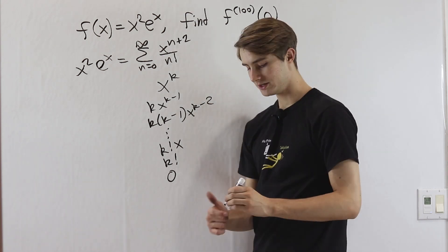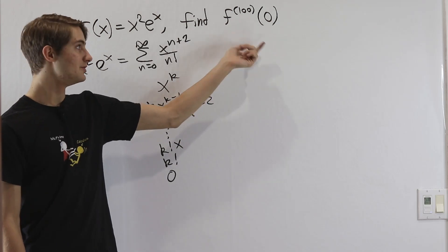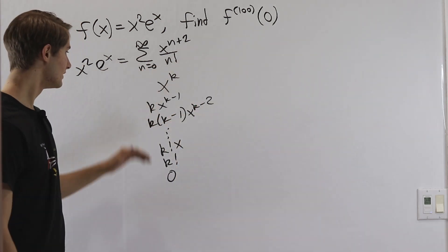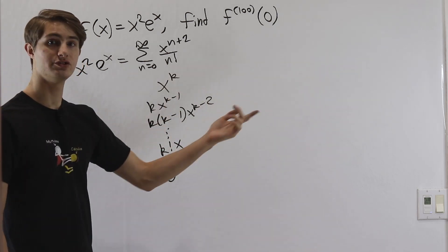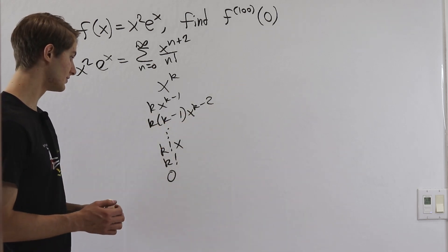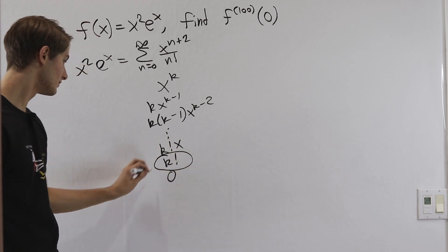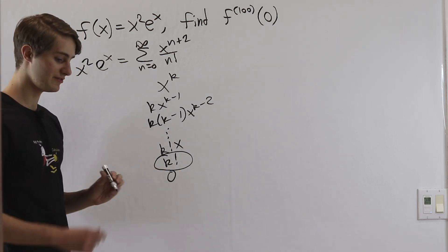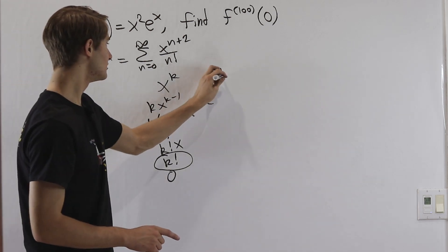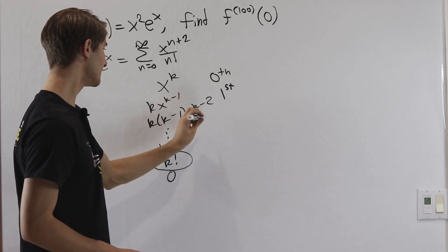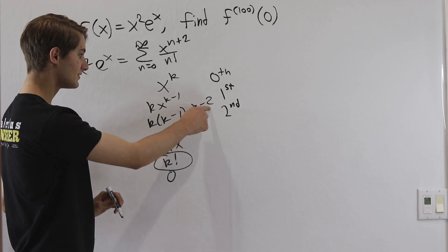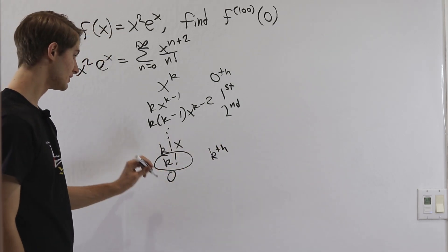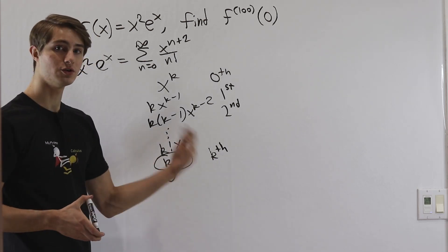This is important because we want to think about what happens when we plug in zero into all of these derivatives. Plugging in zero to x to the k gives zero, and similarly for x to the k minus 1, x to the k minus 2, and the remaining x terms — all zero. The only non-zero term is k factorial, and everything after that is also zero. That k factorial corresponds to the kth derivative, since we need to differentiate k times to reduce the power to zero.